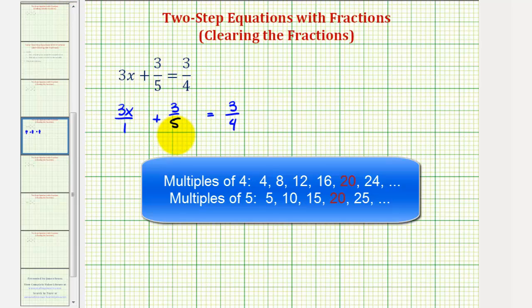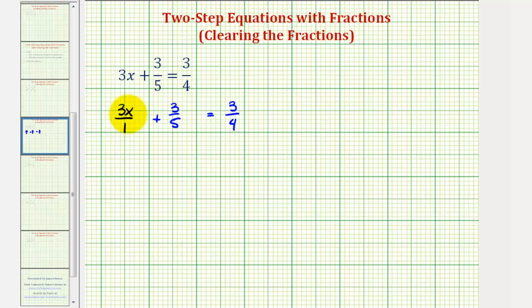20 is the smallest number that's divisible by 4, 5, and 1. If we want a denominator of 20 here, we multiply the numerator and denominator by 20. For a denominator of 20 here, we'd multiply both numerator and denominator by 4. And for a denominator of 20 here, we'd multiply the numerator and denominator by 5.